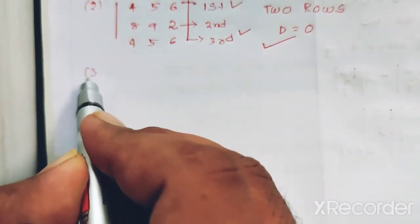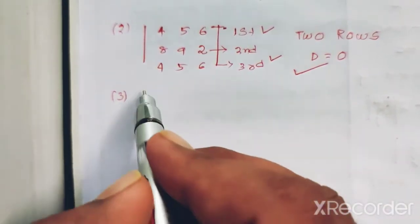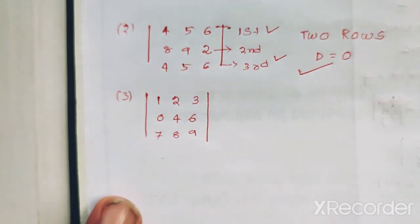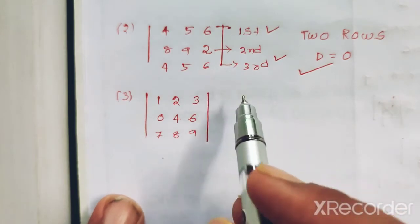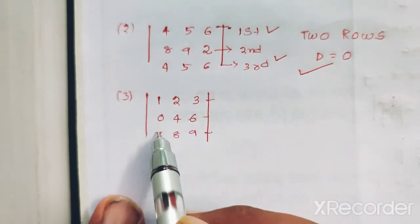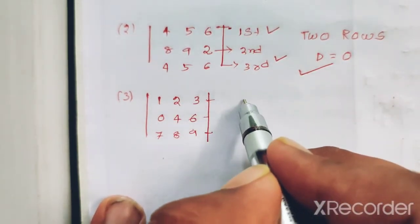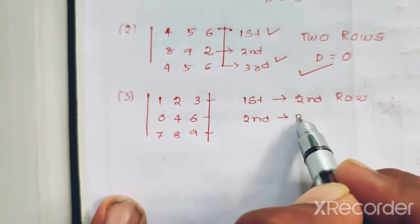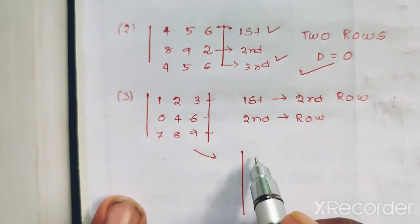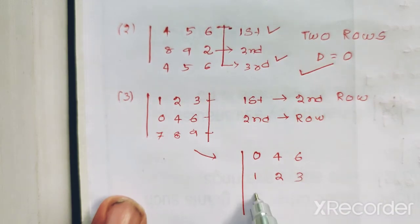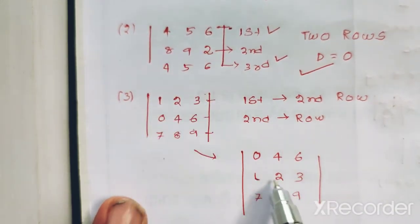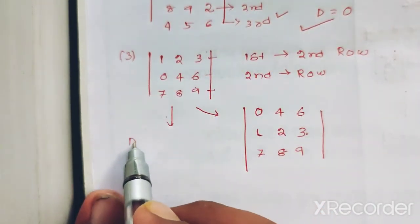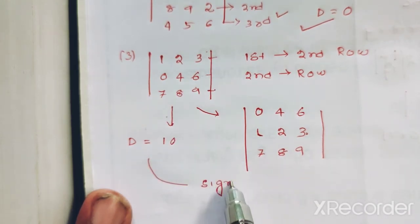Third property: consider the determinant with elements 4, 6, 7, 8, 9, and we have a 3x3 determinant with rows 1, 2, 3 and 0, 4, 6 and 7, 8, 9. This is the first row, second row, and third row. Now if the first row changes to the second row, and the second row changes to the first row — a row interchange — the sign of the determinant changes.